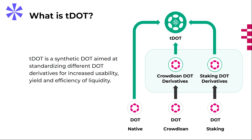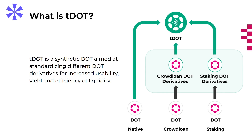Well, what is TDOT then? TDOT is a synthetic DOT asset which serves to standardise the different DOT versions, also known as derivatives, across the individual parachains for increased usability, yield, and efficiency of liquidity. It does this by being backed by individual liquidity pools of native DOT and DOT derivatives, such as LDOT, allowing for a highly stable peg value against native DOT.